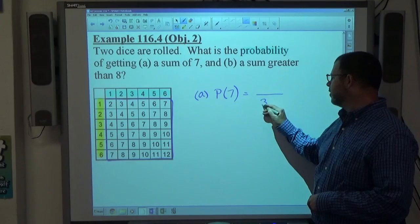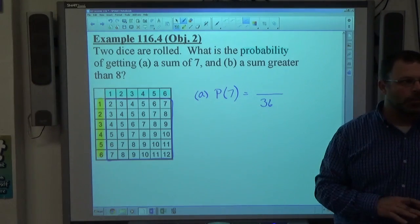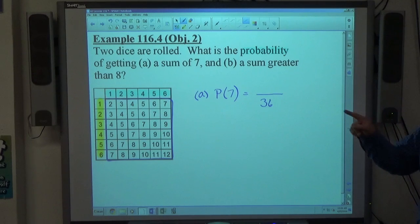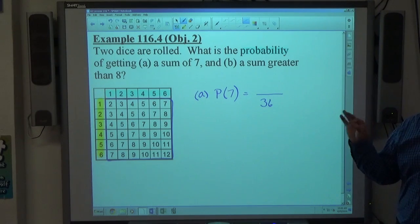So the bottom number on this is going to be 36 every time. When you're rolling two dice, the bottom number is always 36 because there's 36 outcomes. There's only 11 different numbers there, but 36 numbers altogether.